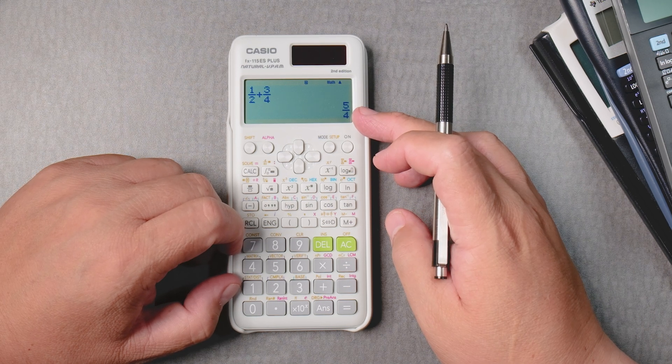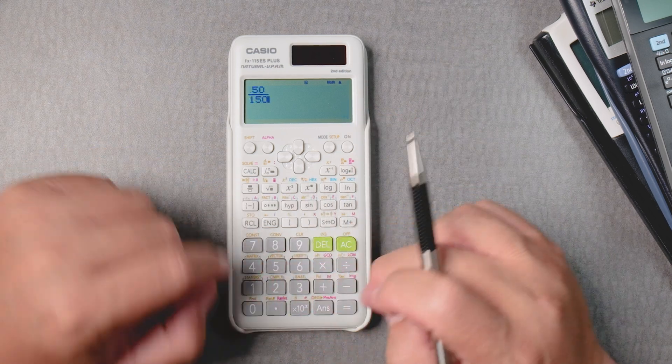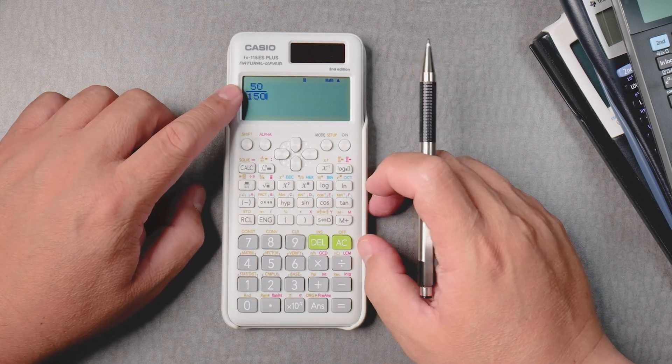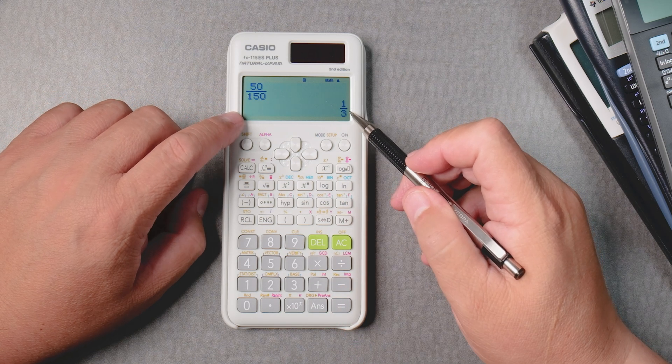So let's say I want to reduce 50 over 150. We can put it in fraction form. We press equals and it gives you a reduced fraction.